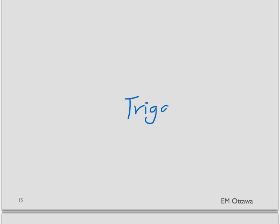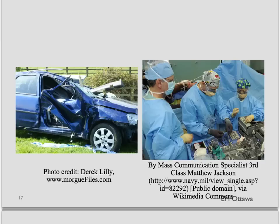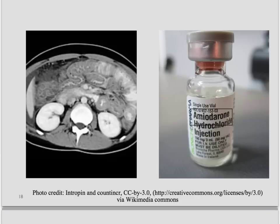Now that you have an existing hyperthyroid state, all you need is a trigger to flip the patient into thyroid storm. What are the triggers? They include any assault on the body, such as trauma, surgery, MI, infection, and so on. The trigger can also be a large iodine load to the body, such as CT contrast or amiodarone, which contains iodine. Therefore: hyperthyroid state plus trigger equals thyroid storm.